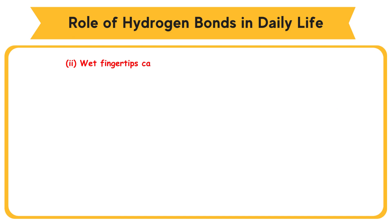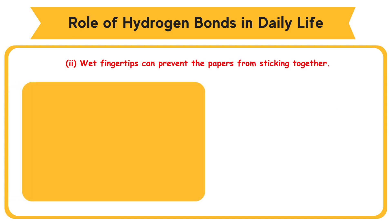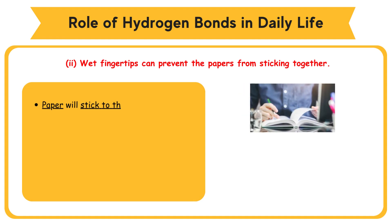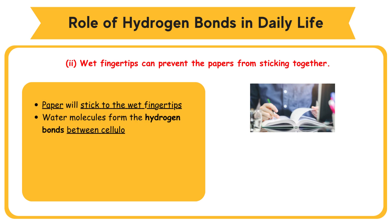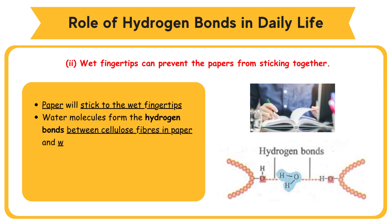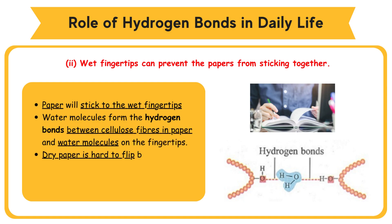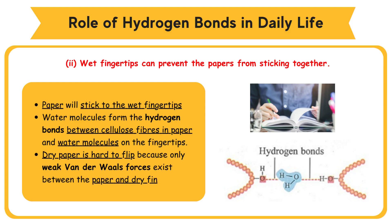Second: wet fingertips can prevent papers from sticking together. Paper will stick to wet fingertips due to the presence of water molecules. Water molecules form hydrogen bonds between cellulose fibers in paper and water molecules on the fingertips. Dry paper is hard to flip because only weak Van der Waals forces exist between the paper and dry fingertips.